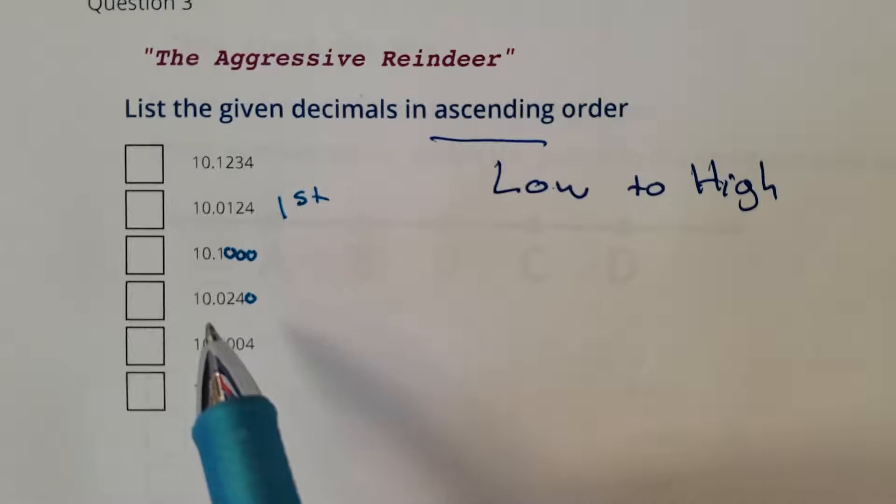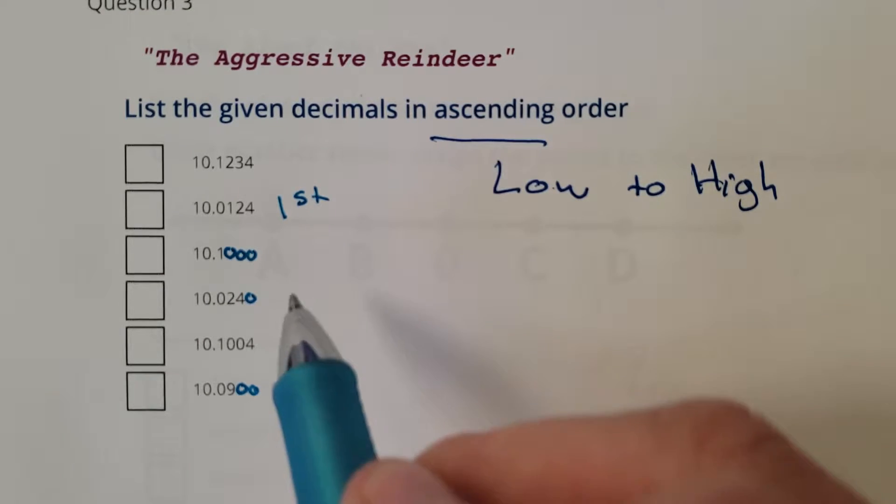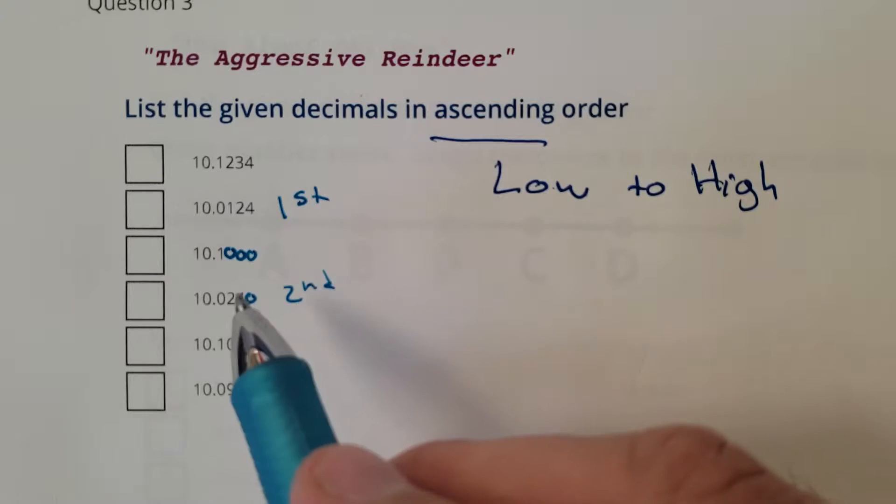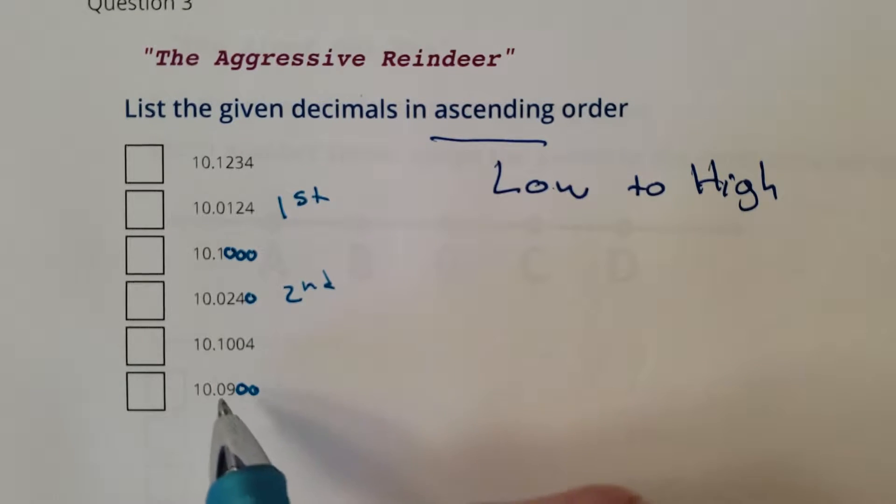Then I think 240 is going to be next, so you're second place. Third place is 900. Everything after - they have the 10 in common, so I'm just kind of ignoring the 10. Those are all the same. I care about the numbers that are different. So you're third.